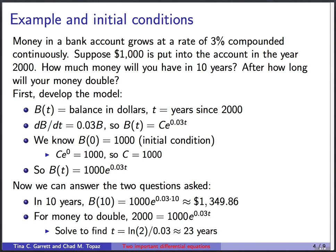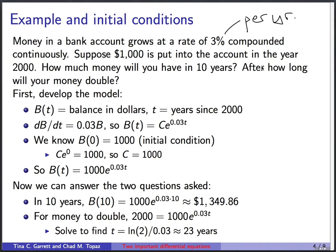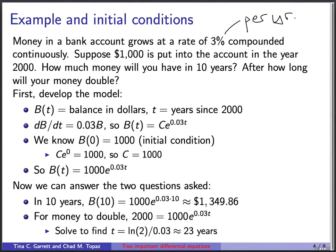Let's do an example. Money in a bank grows at 3% per year, compounded continuously. Suppose $1,000 is put into the account in the year 2000. Let b(t) be the balance and t be years since 2000. The model is db/dt equals 0.03 times b, and from the previous result the solution is b equals c times e to the 0.03t.